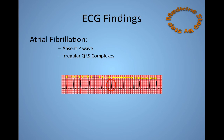So that's how to recognise AF on an ECG. Look at as many ECGs as possible to recognise a normal ECG and atrial fibrillation, with the absence of P-waves and irregular R-R intervals. I hope that was useful. Thank you.